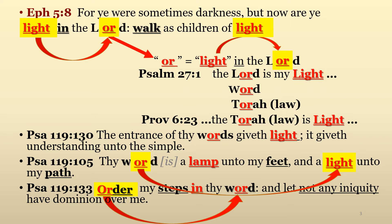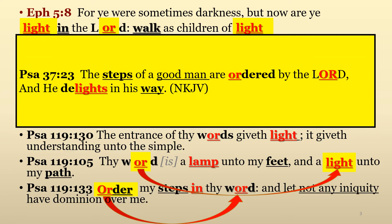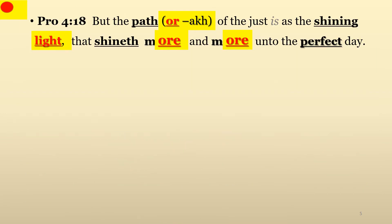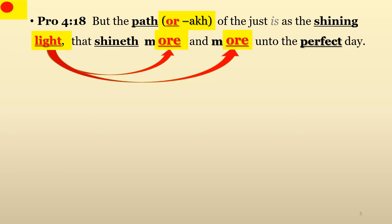And in conjunction with this last verse, in Psalms 37, verse 23, it states, 'The steps of a good man are ordered by the Lord, and he delights in his way.' In Proverbs chapter 4, verse 18, it describes the pathway of light that the righteous followers of the Lord walk in: 'The path of the just is as a shining light that shineth more and more unto the perfect day.'